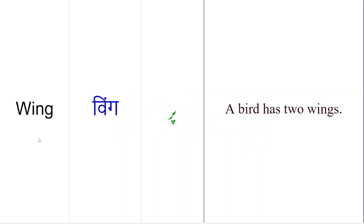Doosthoom, wing ka sab se common meaning hota hai 'par' — jaise parinday ke par hootay hain. Toh yahaan pe hum nae kaha: 'A bird has two wings' — parinday ke do par hootay hain. Iske alawah, doosthoom, jahazoon mein jo uske side pe bazu niklae hootay hain, par niklae hootay hain, unko bhi wings kaha jata hai.